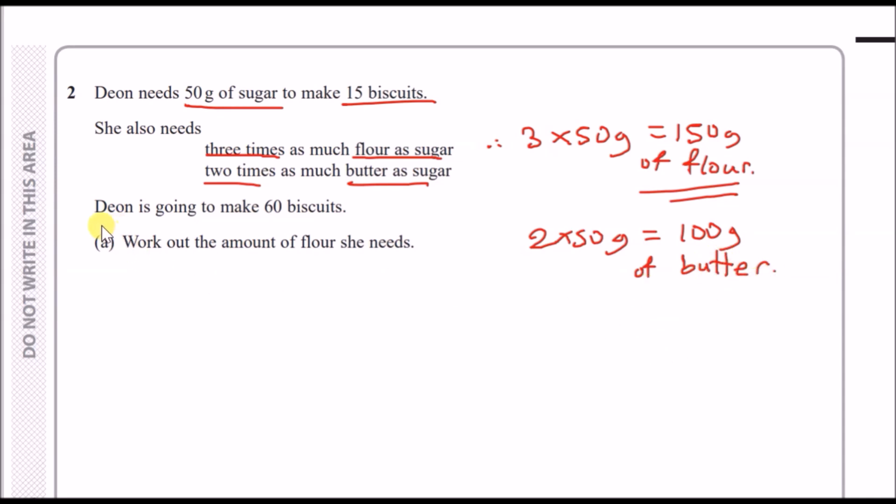Dean is going to make 60 biscuits and we need to work out the amount of flour she needs. So far we know how much flour is needed for 15 biscuits. This means 15 biscuits equals exactly 150 grams of flour. We notice that 60 biscuits is just four times bigger, so 4 × 150 is 600 grams.